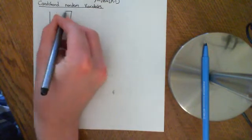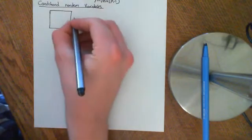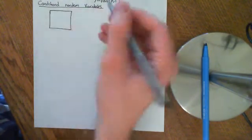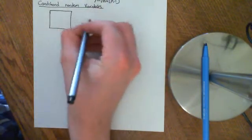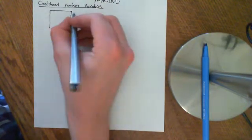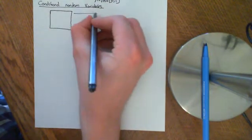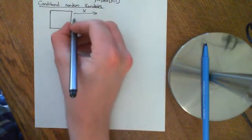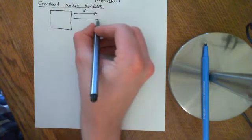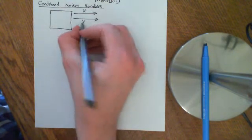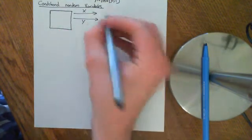Here is our square, and we have — whichever way you want to think of it — either we're ascribing an ordered pair of real numbers, or we have two random variables, X and Y. In this case it's probably better and easier to think in terms of two random variables, X and Y.